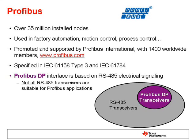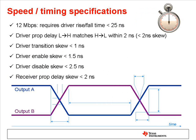Beyond the standard RS-485 requirements, PROFIBUS designers should consider several specific characteristics for the transceivers. PROFIBUS uses signaling rates up to 12 megabits per second, so the transceiver should be capable of that speed. In addition, the propagation delays should be well controlled and matched between rising and falling transitions. This allows for timing budget precision at the system level.